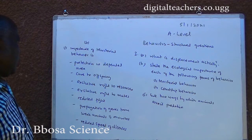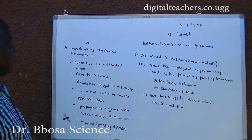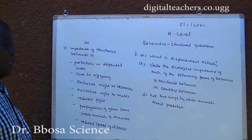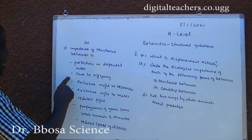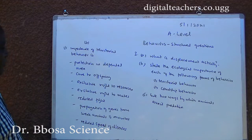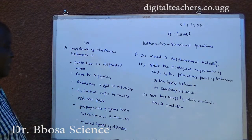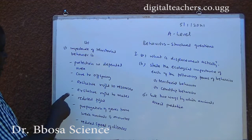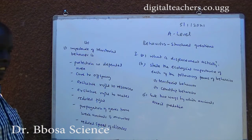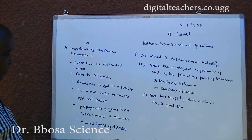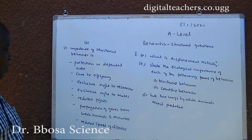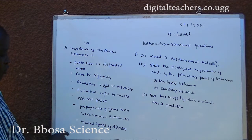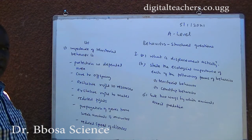B. Number 1: Importance of territorial behavior includes: protection in the defended area, care to offspring, exclusive right to resources, exclusive right to mates, reduced fights, propagation of genes from weak animals is minimized, and reduced spread of diseases.